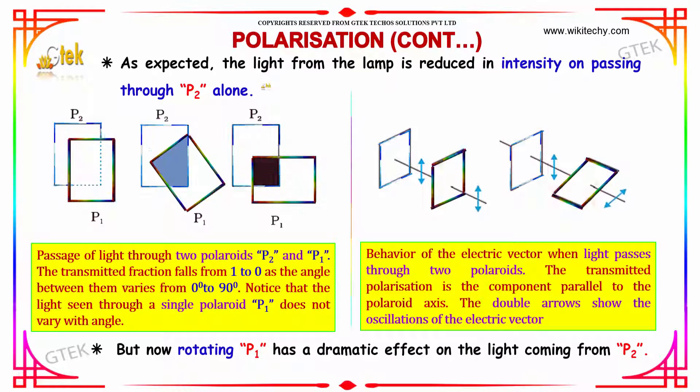As expected, the light from the lamp is reduced in intensity on passing through P2 alone. Here is the behavior of the electric vector when light passes through two polaroids. The transmitted polarization is a component parallel to the polaroid axis. The double arrow shows the oscillation of the electrical vectors.